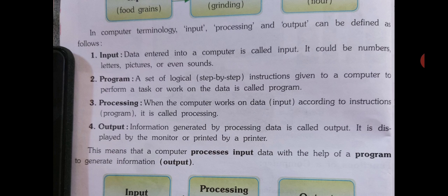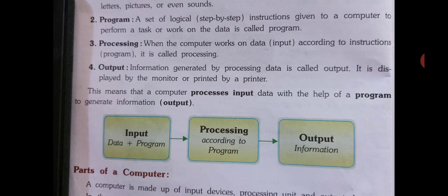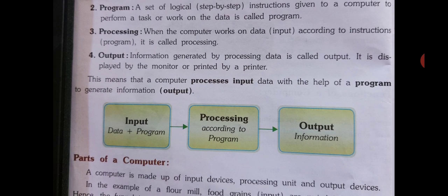Tisra wala hai processing — when the computer works on data according to the instructions, it is called processing. Matlab jo hum input dete hai data dete hai computer ko kaam karne ke liye, uske hisaab se jo program ka process hota hai usko processing kehte hai. Chautha hota hai output — information generated by the processing data is called output. Jo information gather hota hai data ko pura ka pura computer ka kaam hone ke baad usko output kehte hai. It is displayed on the monitor or printed by the printer.